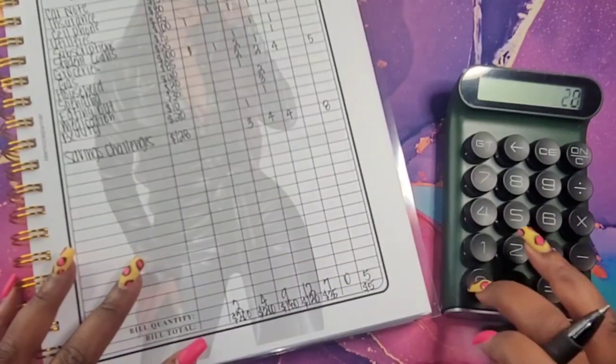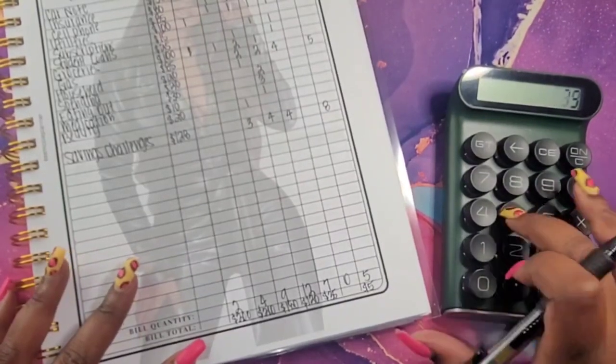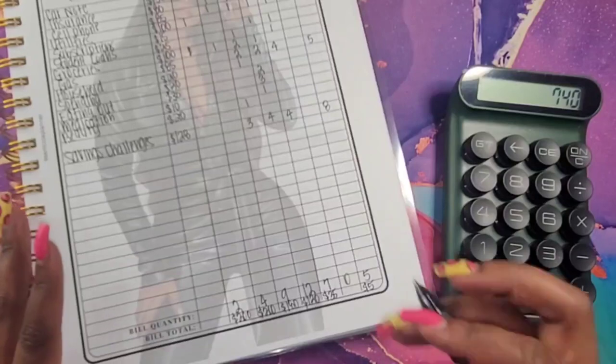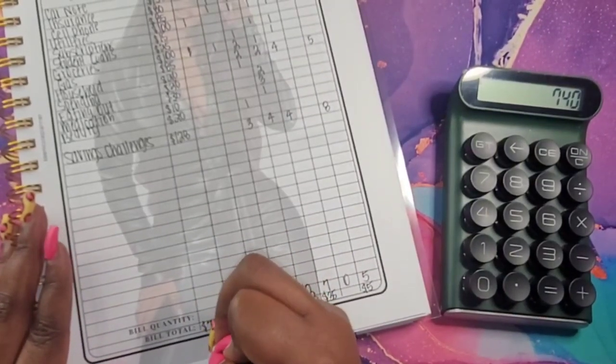So let's do 200, 200, 180, 120, 35, and 5. So that gave me a total of $740.